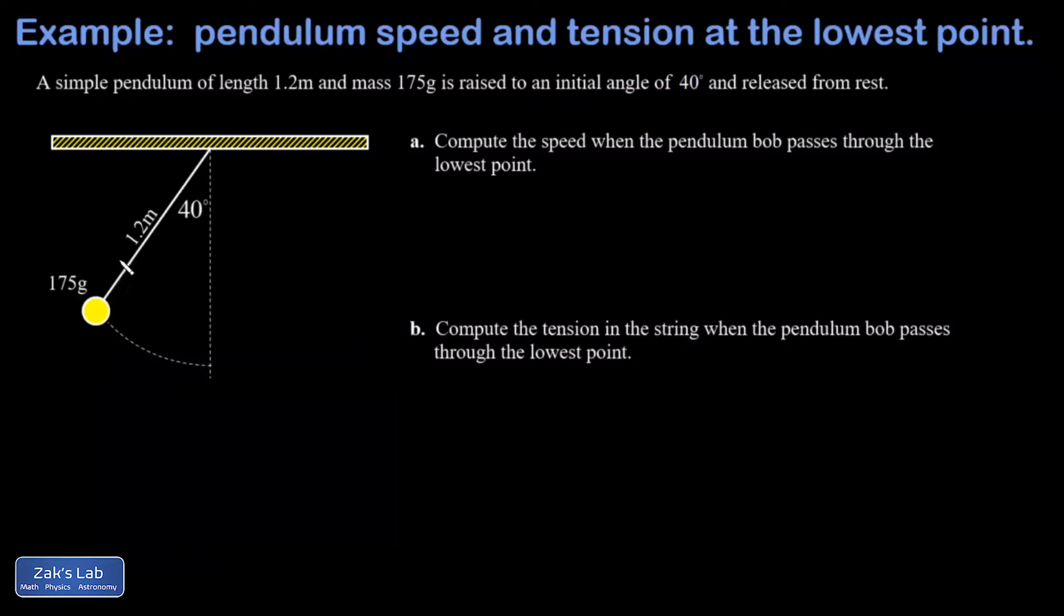In this problem we're given a simple pendulum of length 1.2 meters and we have the mass of the bob on that pendulum which in SI units will be 0.175 kilograms, and we're told that we raise this thing to an initial angle of 40 degrees and we release it from rest.